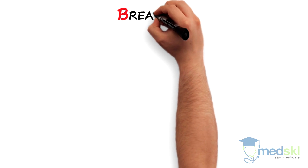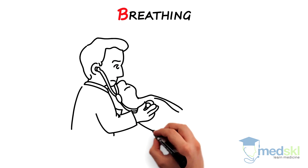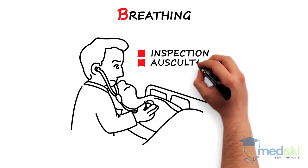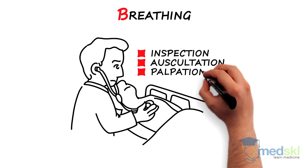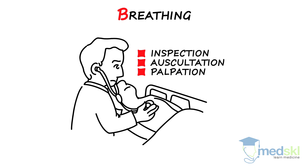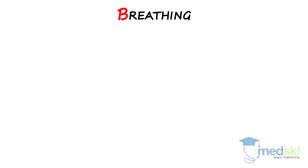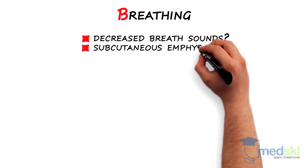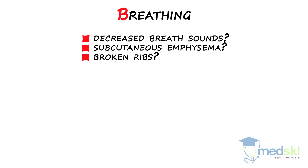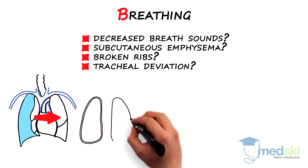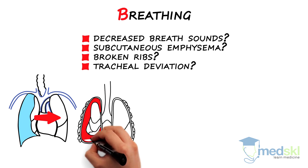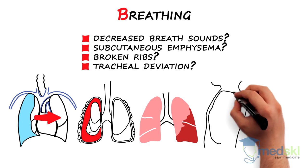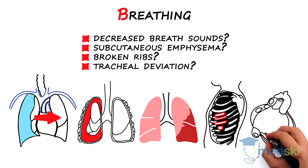B — breathing. Examine the chest through inspection, auscultation, and palpation. You are looking for life-threatening injuries. Decreased breath sounds, subcutaneous emphysema, broken ribs, and tracheal deviation are concerning for a tension pneumothorax, hemothorax, pulmonary contusions, flail chest, and cardiac tamponade.